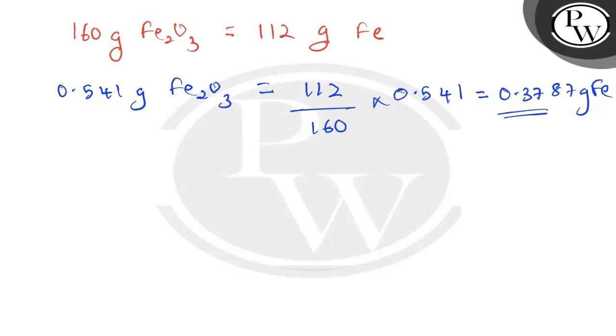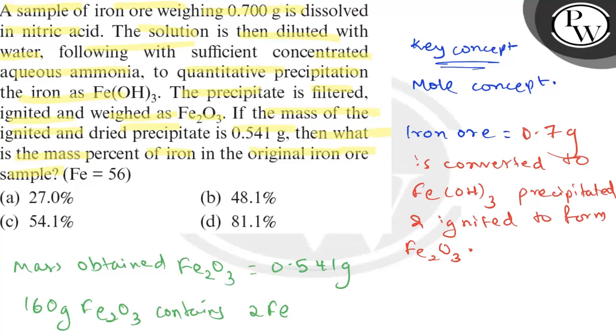Percentage Fe in sample is equal to 0.3787 divided by 0.700 multiplied with 100, which gives 54.1%. So percentage Fe in sample is 54.1%.